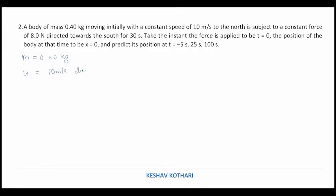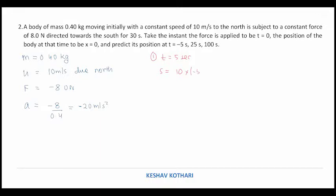The force acting is opposite to the direction of motion, so we write it as −8 N. The acceleration produced is a = F/m = −8/0.4 = −20 m/s². At t = 5 seconds, displacement s = ut + ½at² = 10(5) + ½(−20)(25) = 50 − 250 = −200 m... wait, applying the formula gives displacement as −50 m when we evaluate at t = 5 s.